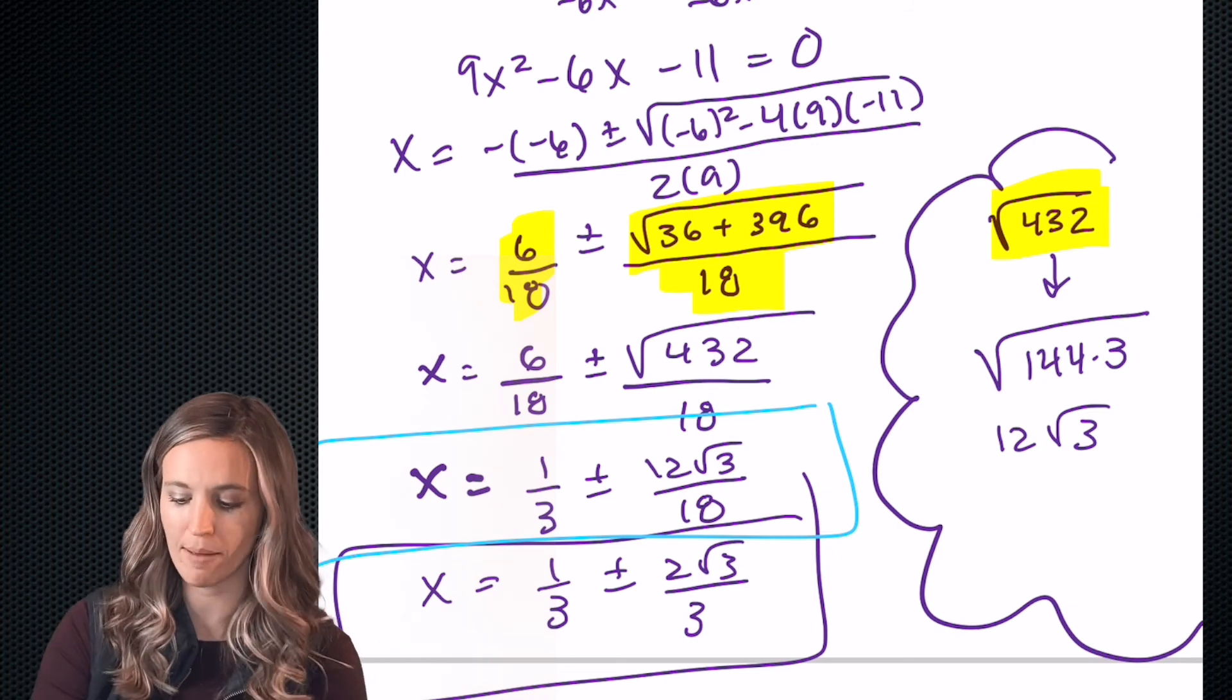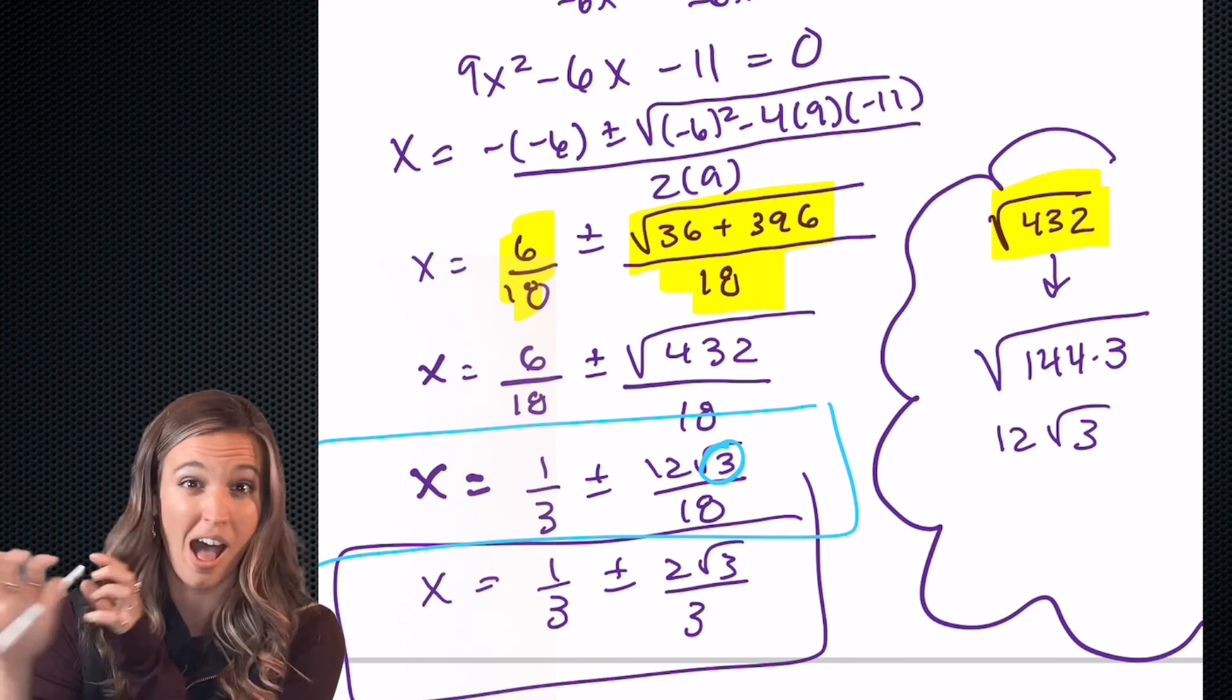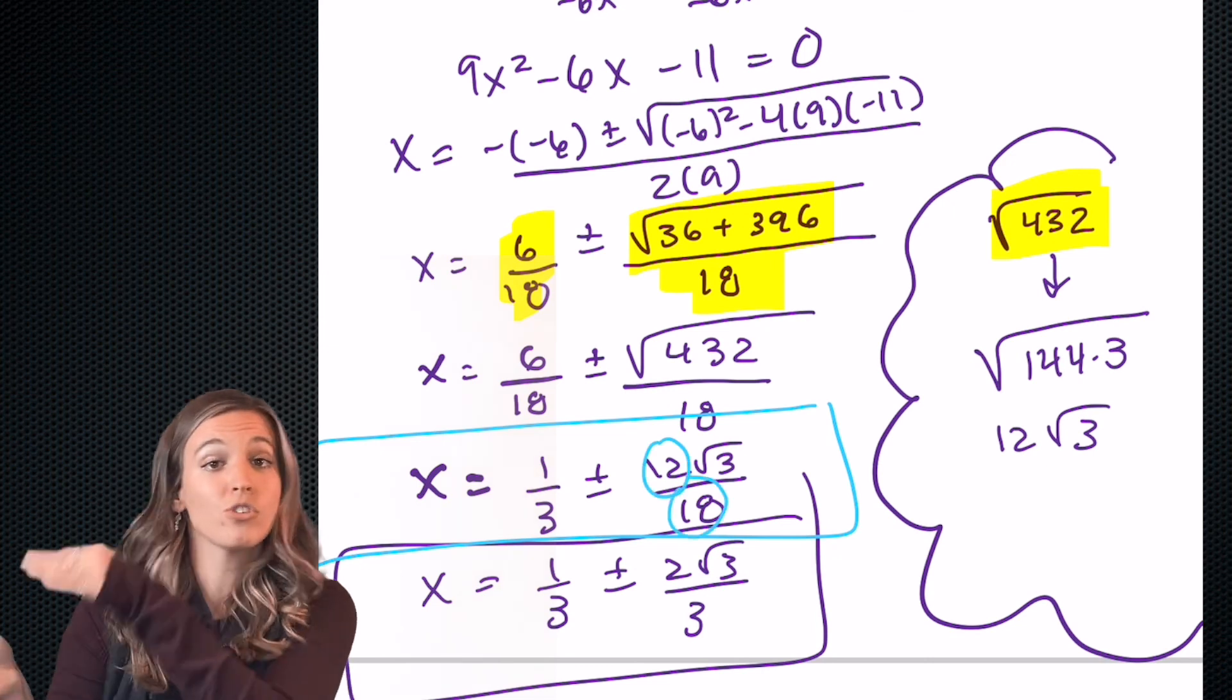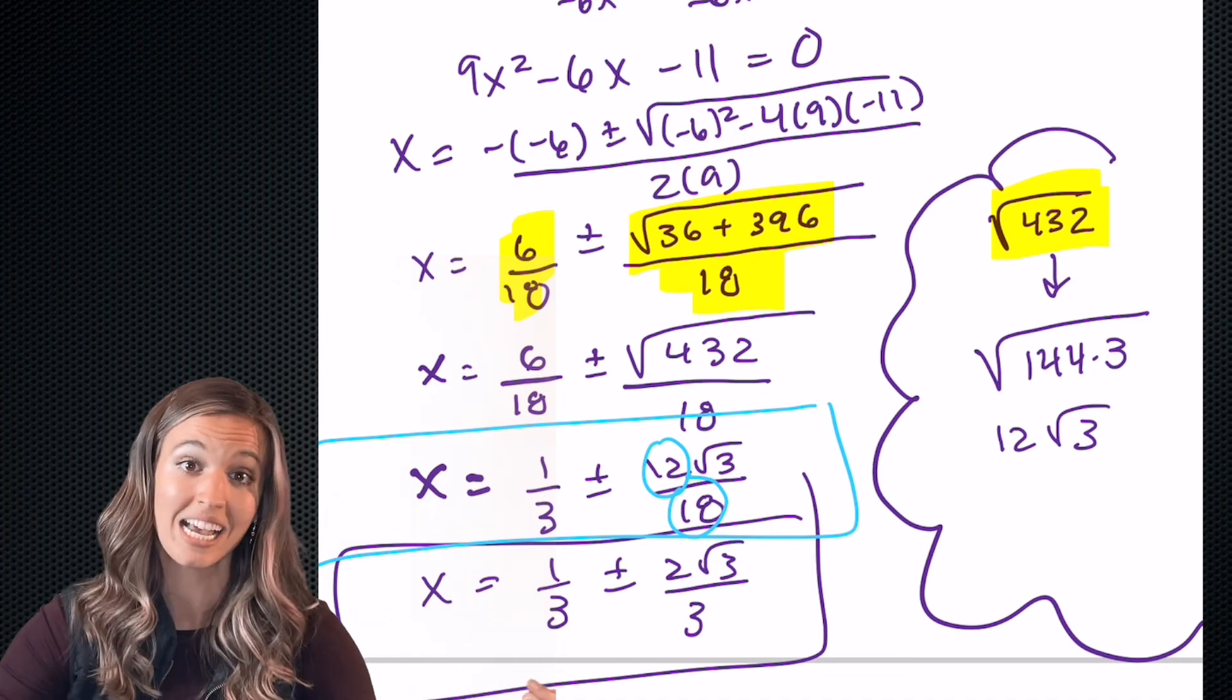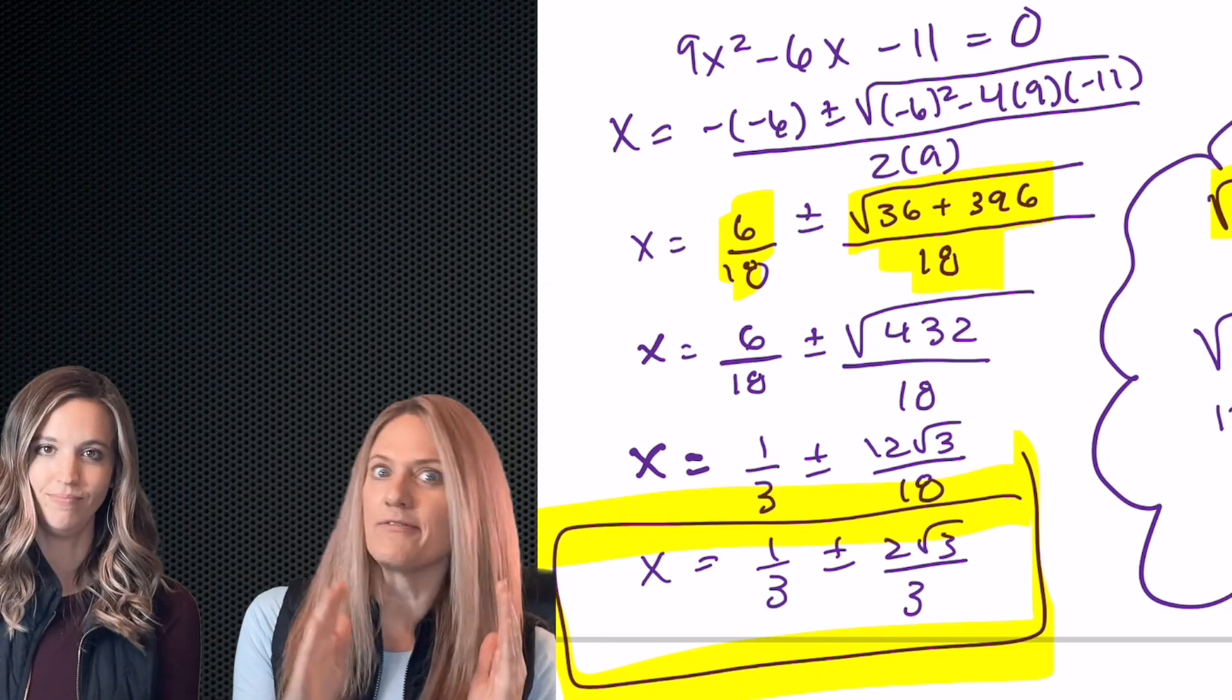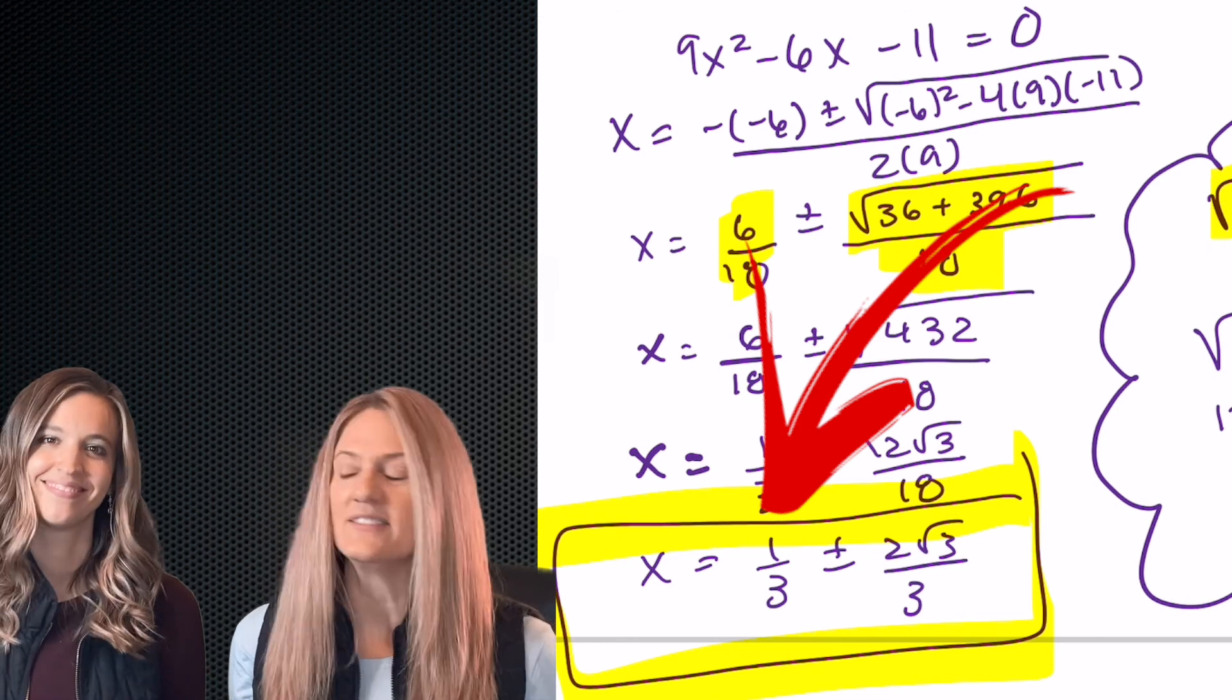I know it's really tempting to kind of be like, oh, well, I have a 3 inside the radical. Could I maybe simplify that with the 18? I can't. It's inside a radical. It's protected. We're not allowed to mess with that number. What I can do is simplify the 12 and the 18 because those are both outside the radical, so 12 divided by 18, I can divide the numerator and denominator by 6 and get 2 thirds. You know, the other reason I like it split is that we can clearly see what the axis of symmetry is and then how far left and right of that the x-intercepts are. So what would my axis of symmetry be for this problem? One-third. X equals one-third. Nice.